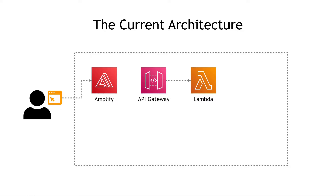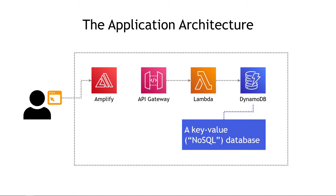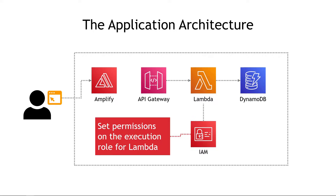Next, let's see how to incorporate a database. We want to persist or store that math result somewhere, and we need to return it to the user. Most real-world apps have databases, so I'll walk you through how to set this up. As we do that, we're also going to need to handle permissions between the different parts of the application. For our database, we're going to use DynamoDB — a key-value or NoSQL database. It's generally lighter weight than a relational database where you have to set up your schema and relationships ahead of time. We also need to give our Lambda function permission to write to the database.